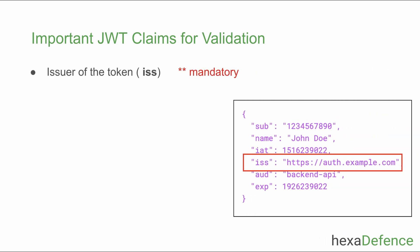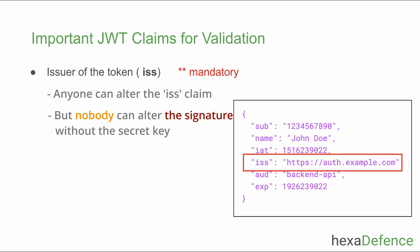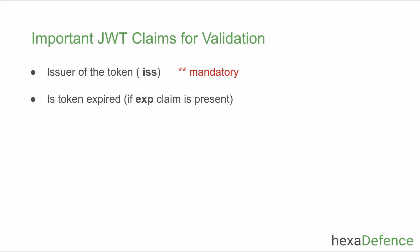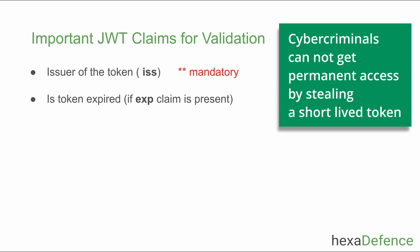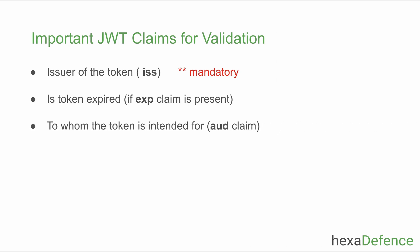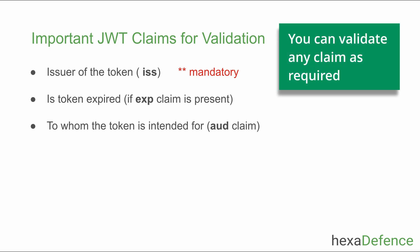When it comes to token validation, you can use any number of claims, but there are some mandatory attributes. The most important is the issuer, found in the 'iss' claim — the backend API fully trusts the issuer and any token from that issuer is trusted. You must validate the signature to confirm the token was genuinely generated by that issuer. Next, validate whether the token is expired, since tokens have a lifetime. The audience claim can also be validated to ensure the token is intended for your specific backend — though this is optional.